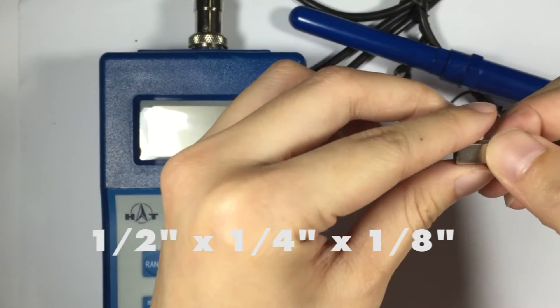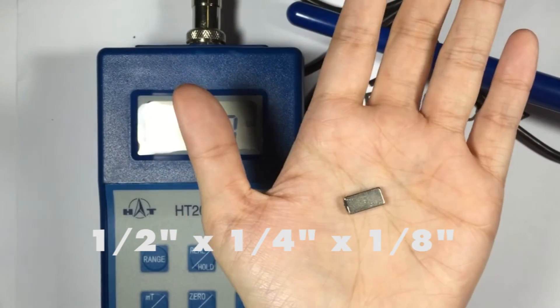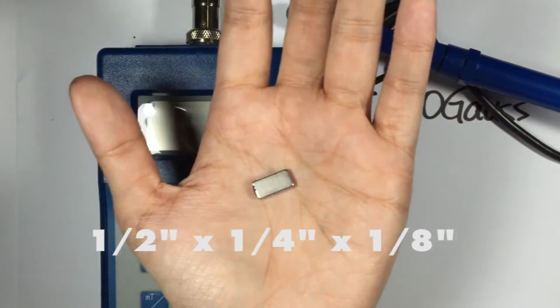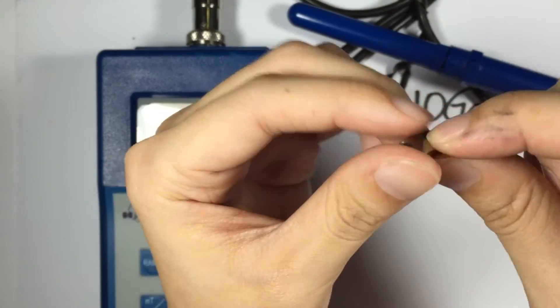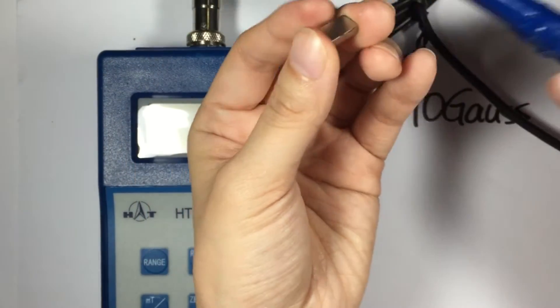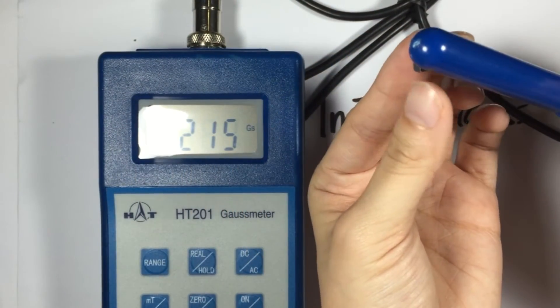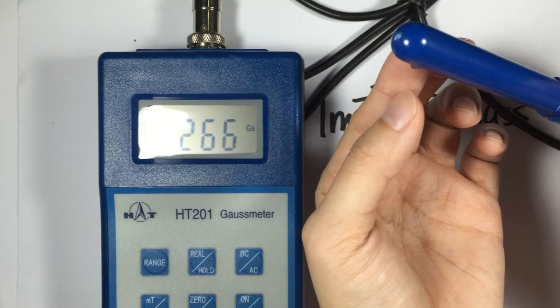Half inch by 1 fourth inch by 1 eighth, compared to the 3 mm, it's like 10 times bigger. Let's measure that. It shoots up to 2,000.